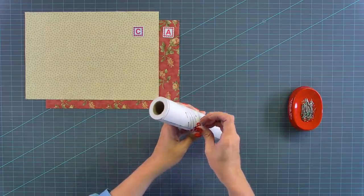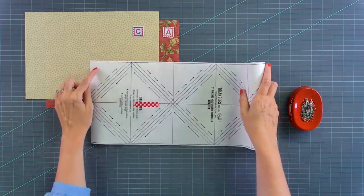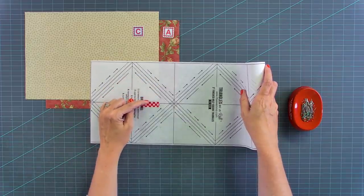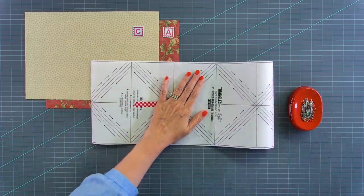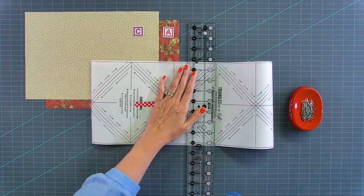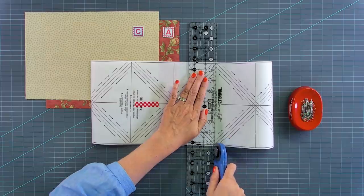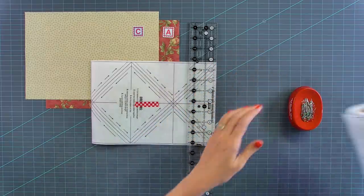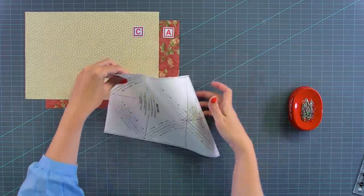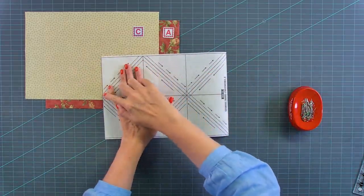This block uses 12 half square triangles so each square of paper makes two half square triangles, so since we're making 12 we need six squares of paper. On your pattern it does tell you the SKU number you need and we're using H300 which gives us three inch finished half square triangles. When you're cutting your triangle paper just make sure you cut directly on that line.